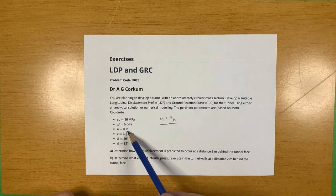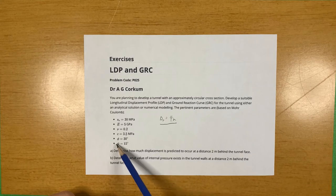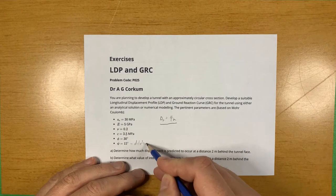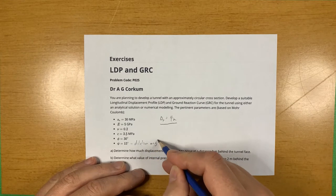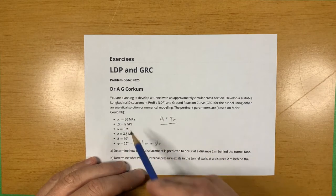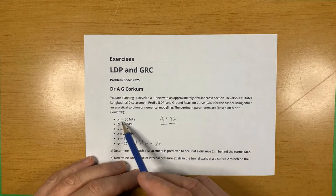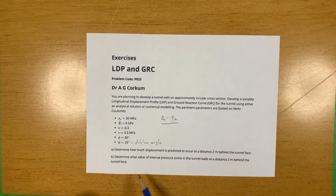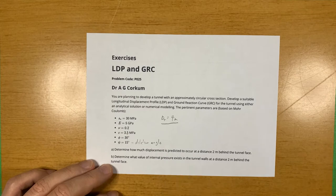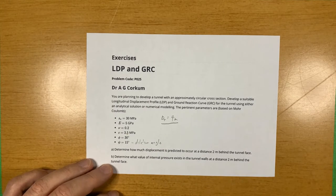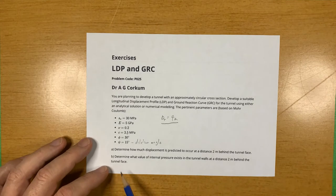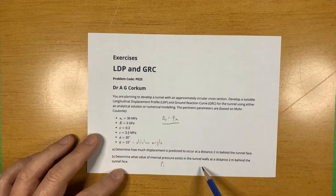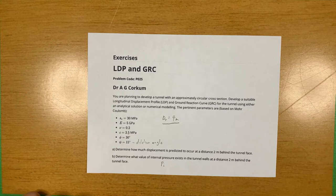The pertinent parameters using the Mohr-Coulomb criterion are listed here. We have a Young's modulus, a Poisson ratio, cohesion, friction, and psi is the dilation angle. We also have an isotropic in-situ stress field S-naught of 30 MPa. From that we have to determine how much displacement is predicted to occur at a distance two meters behind the tunnel face and determine what value of internal pressure P_i exists in the tunnel walls at a distance two meters behind the tunnel face.